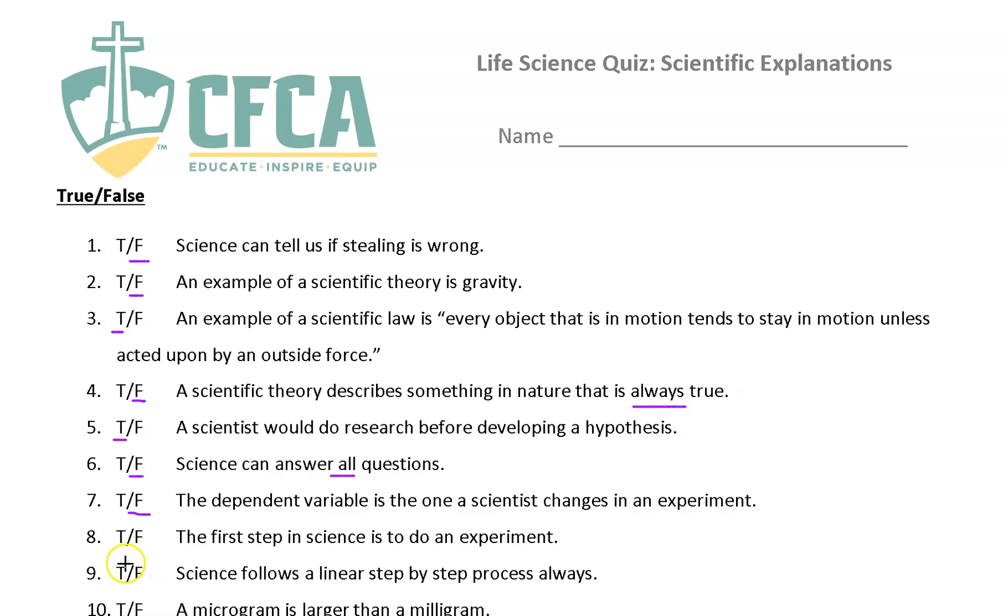The first step in science is to do an experiment. That's false. Science always follows a linear step-by-step process. Remember I told you science can go, it's fluid. It can go back and forth. It doesn't follow this A to B, B to C, C to D. This is, linear means a straight line. But science might get down here and go back and change something. It might stop here and revise the experiment. So you got to do different things.